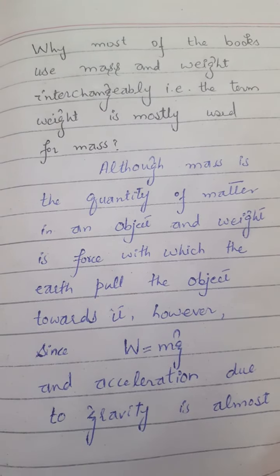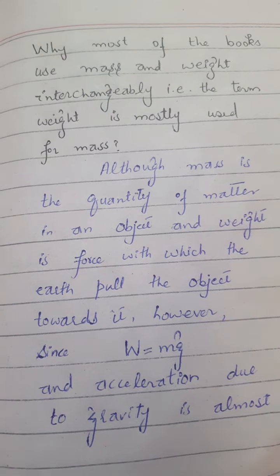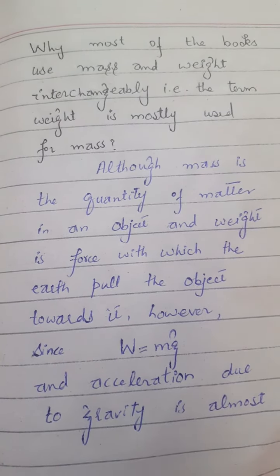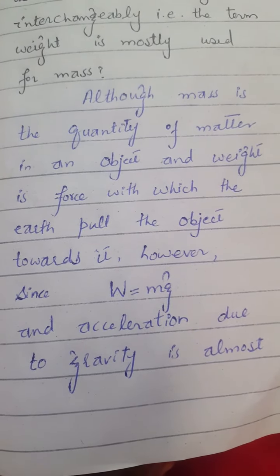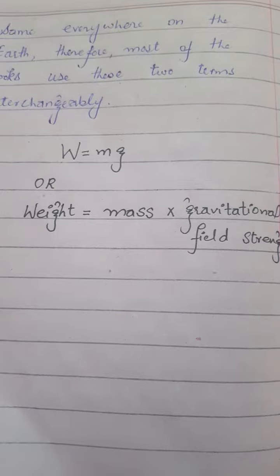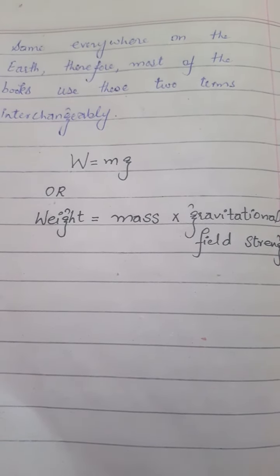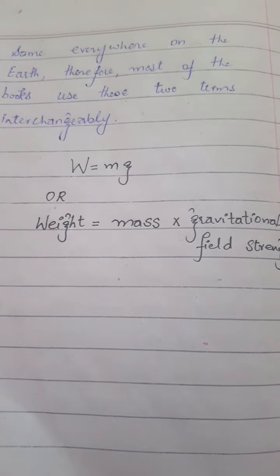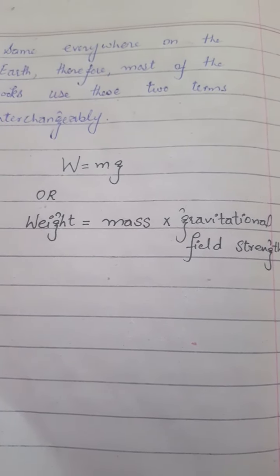Here g is the gravitational field strength and acceleration due to gravity, which is almost the same everywhere on Earth. Therefore, most books use these two terms interchangeably.